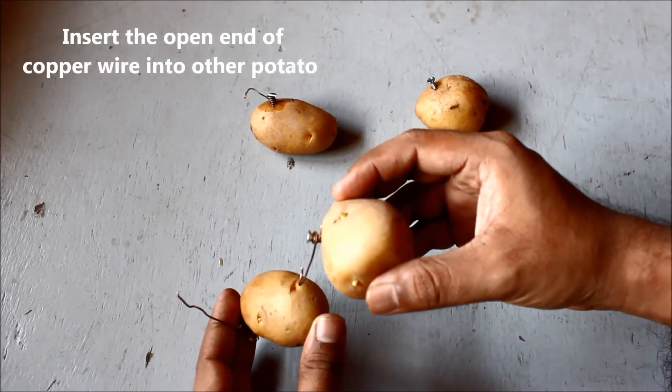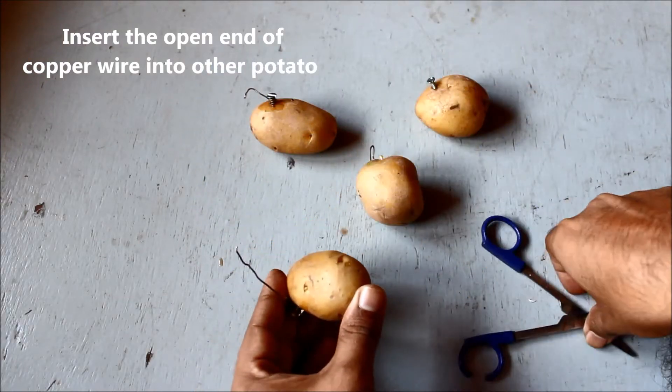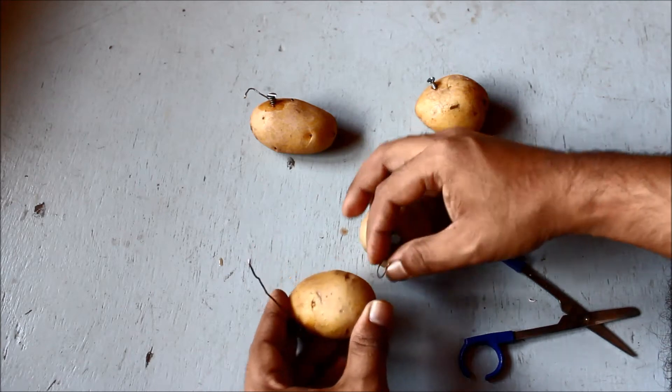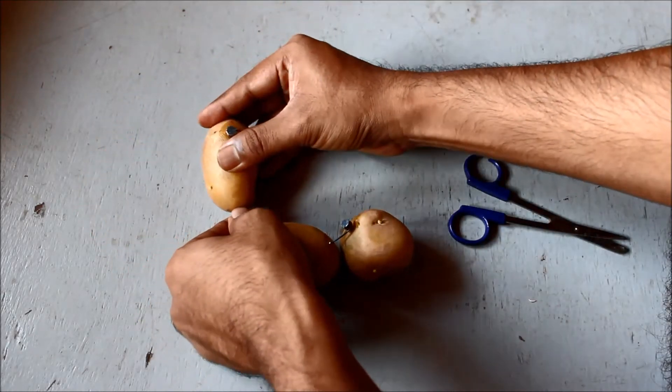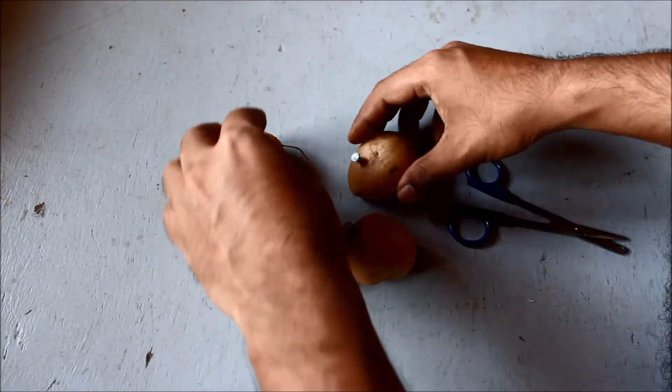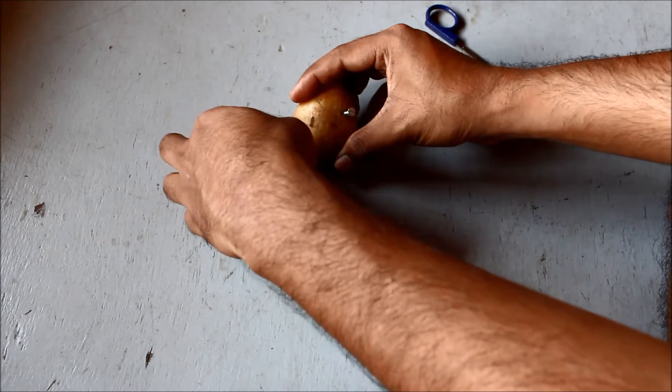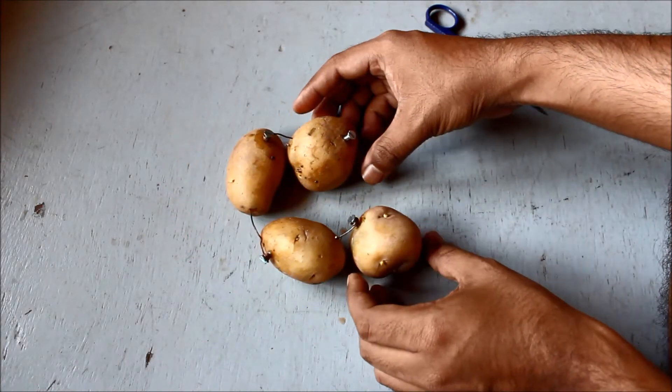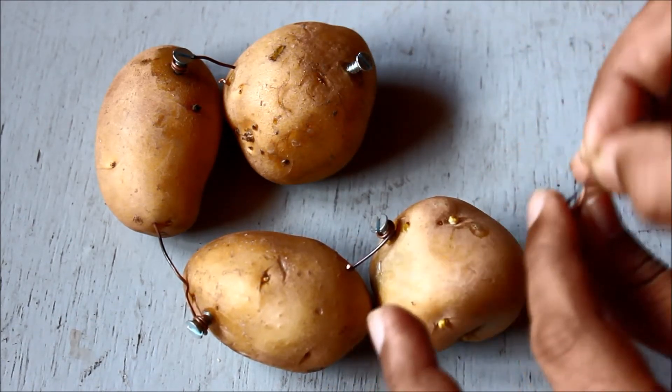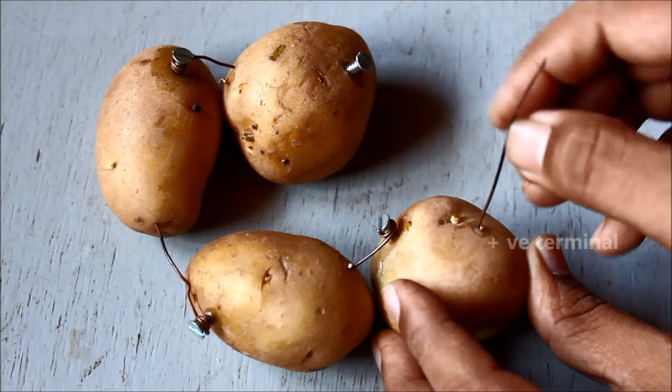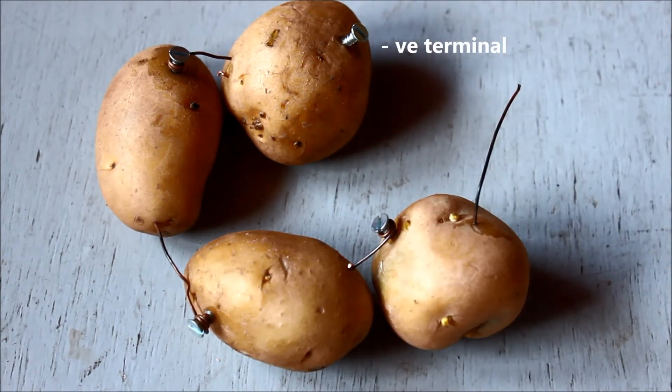The next step is to insert the copper wire of potato number 1 to the second, so just drill small hole and then insert it into potato number 2. And do this for the third. The copper wire of second potato goes into the third and the third one goes into the fourth. So we have connected it in series. And the last but not the least, insert the copper wire into the first potato so that this gives you a positive terminal. You can see the zinc nail and the fourth potato, that is your negative terminal.